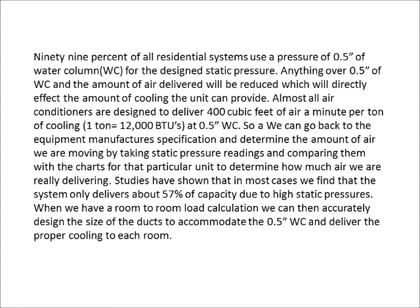The amount of air delivered will be reduced, which directly affects the amount of cooling the unit can provide. Almost all air conditioners are designed to deliver 400 cubic feet of air per minute per ton of cooling. A ton of cooling equals 12,000 BTUs. For example, if we have 3 tons of cooling — 36,000 BTUs — that would require 1,200 CFM (3 × 400). We can then check the equipment manufacturer specifications, take static pressure readings, and compare them with charts for the particular unit to determine how much air we're really delivering. Studies have shown that in most cases, systems only deliver about 57% of capacity due to high static pressures. With a room-to-room load calculation, we can accurately design and size the ducts to accommodate 0.5 inches of water column and deliver proper cooling to each room.